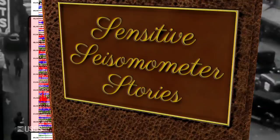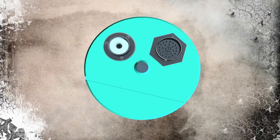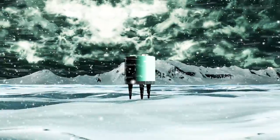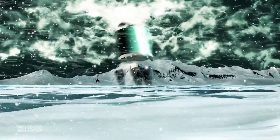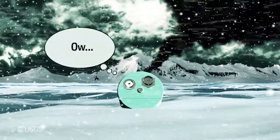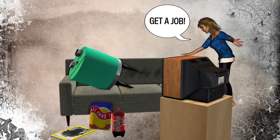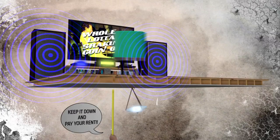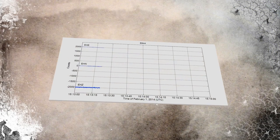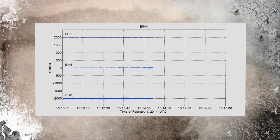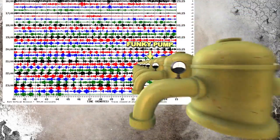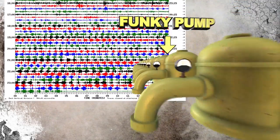Seismometers are sensitive electronic instruments, often deployed in harsh wilderness environments. They can, and do, break. Sometimes they just stop working, but sometimes they just become noisy and unreliable. Here's a record from a three-channel instrument, one of which is broken — guess which one? Nearby equipment and machinery can also create interference.